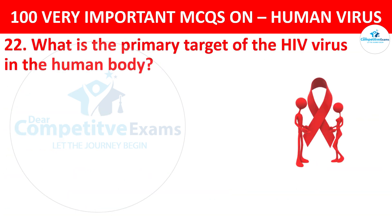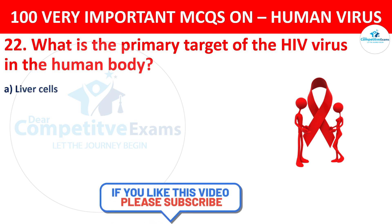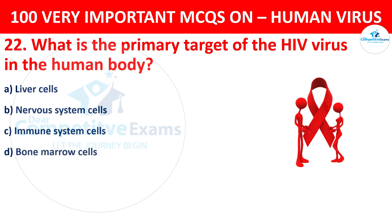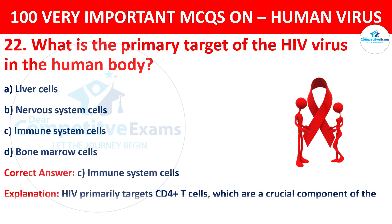Question 22. What is the primary target of HIV in the human body? The options are liver cells, nervous system cells, immune system cells, or bone marrow cells. The correct answer is C, that is immune system cells. HIV primarily targets CD4+ T cells, which are a crucial component of the human immune system.